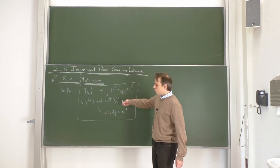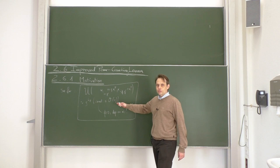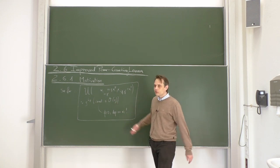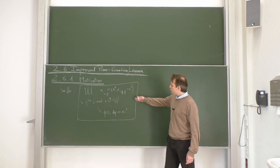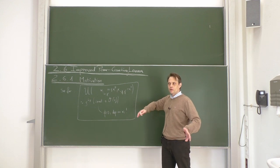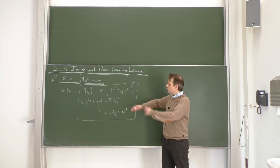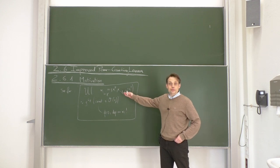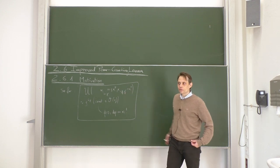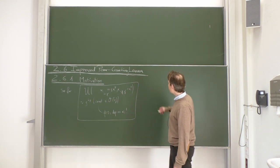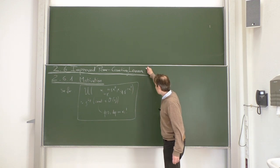We used this lemma in our theorem, where we replaced the alphas by betas, and then we did a simultaneous power counting in terms of many different variables. To draw that conclusion, we actually need a few more details.